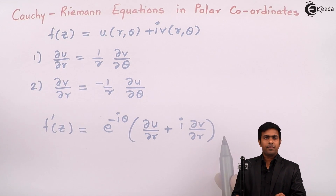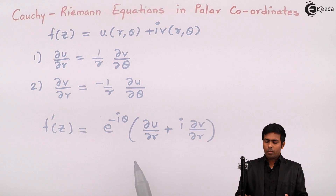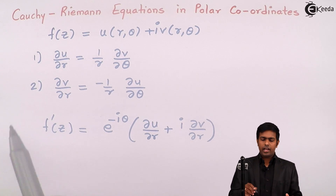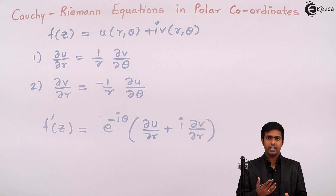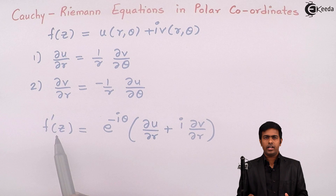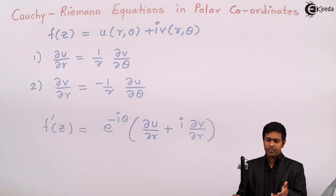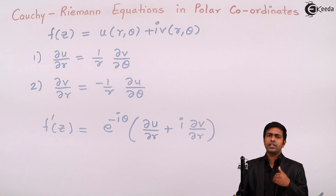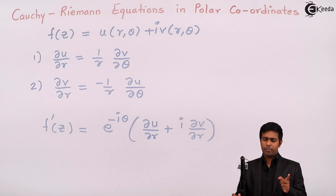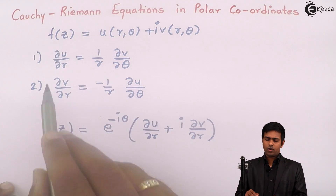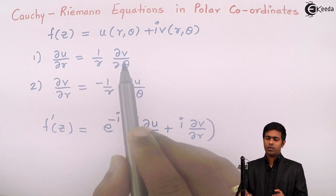By using this formula, if u and v are given in terms of r and theta, we can obtain f'(z). If f(z) is given in terms of r and theta instead of in terms of z, we use this formula to get f'(z). If f(z) is given in terms of z only, we get f'(z) by performing the normal derivative using basic derivative formulas.